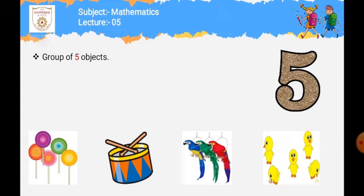Next group میں ہمارے پاس parrots ہیں۔ Count کرتے ہیں: one parrot, two parrots, three parrots۔ لیکن ہمیں تو five parrots چاہیئے اور انہوں نے ہمیں three parrots دیئے ہیں۔